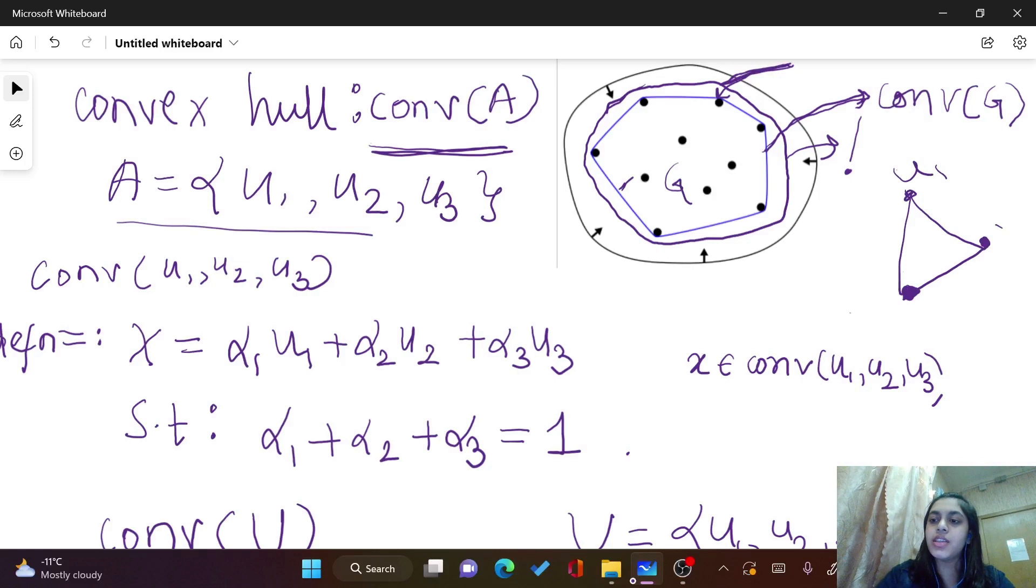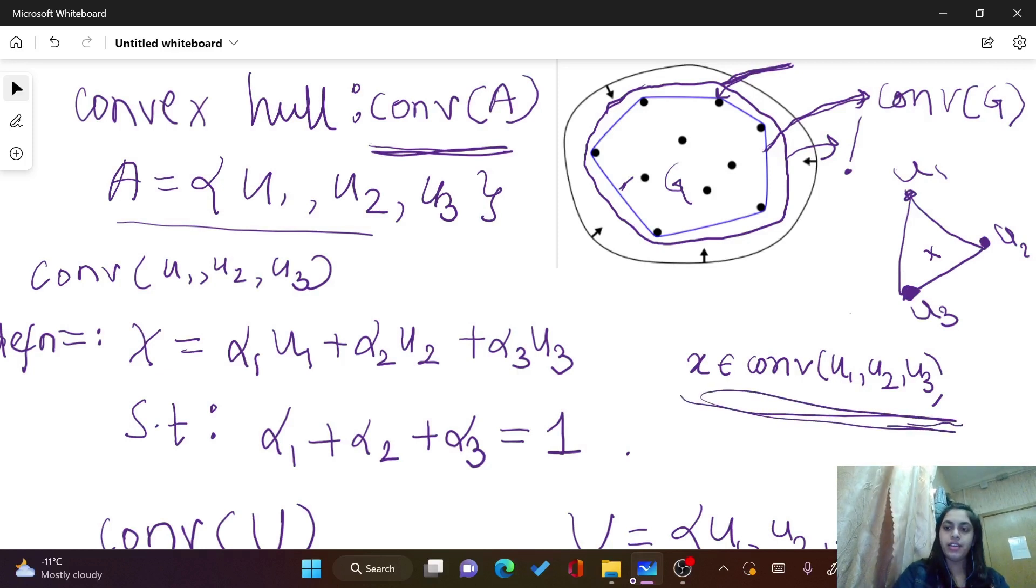Now let's name these points. Let's say it's u1, u2, and u3. And let's say there is a x somewhere that belongs to the convex hull of u1, u2, and u3. So how do we mathematically, formally define it? And let's just call this set as A. So this A set consists of three points: u1, u2, and u3. You have to formally write the definition of it.